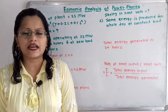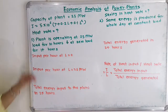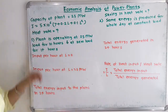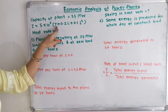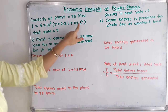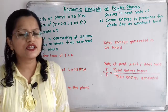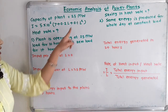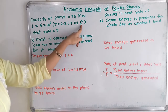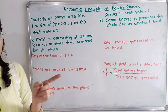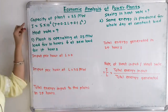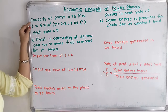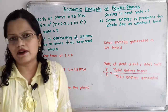Let us first understand the given data. Plant capacity is 25 megawatt and the input-output curve is I = 5 × 10^6 × (7 + 0.2L + 0.1L²), where input I is in kilojoule per hour. So when we put a load value L into this equation we get input per hour, since the unit of input is kilojoule per hour and load L is in megawatt.